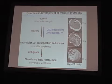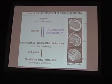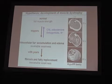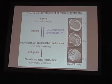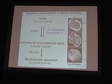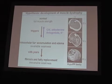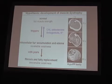Here is our hypothesis — it is like a summary. Fibers with a normal resting potential show full muscle strength. There are some triggers which can change muscle function, leading to an accumulation of intracellular sodium, edema, and weakness. However, this weakness is reversible for several years. After years, and with age, this turns to an irreversible weakness and the muscle is replaced.